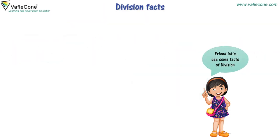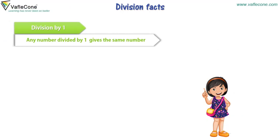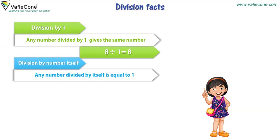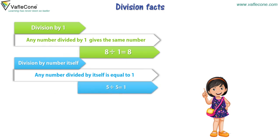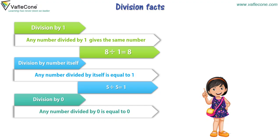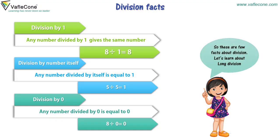Friends, let's see some facts of division. Division by one: any number divided by one gives the same number. Like, eight divided by one is equal to eight. Division by the number itself: any number divided by itself is equal to one. Like, five divided by five is equal to one. Division by zero: any number divided by zero is equal to zero. Like, eight divided by zero is equal to zero. So these are a few facts about division.